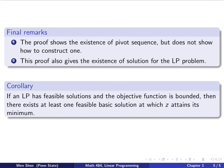So let's state a corollary, which is a direct or immediate consequence of theorem C. It states as follows. If you have an LP problem, which has feasible solutions, and the objective function is bounded, then there exists at least one feasible basic solution at which Z attains its minimum.